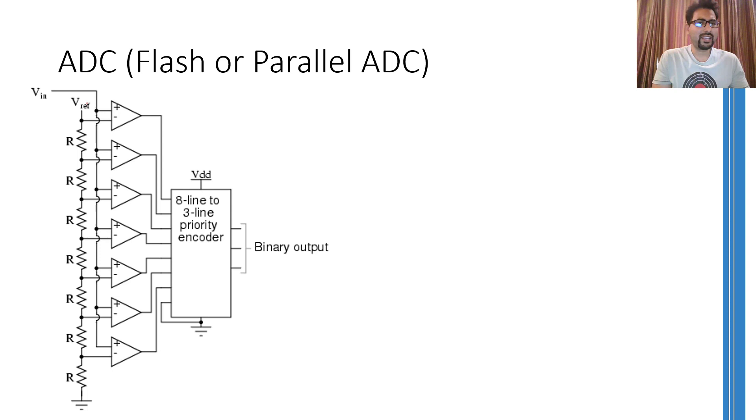Now let me explain how this 3-bit flash ADC will work. The first thing I need to make sure is that the reference voltage shown over here should be equal to the maximum value the input voltage can have. For example, if the maximum input voltage can be 7 volts, then the reference should be a constant DC value of 7 volts.